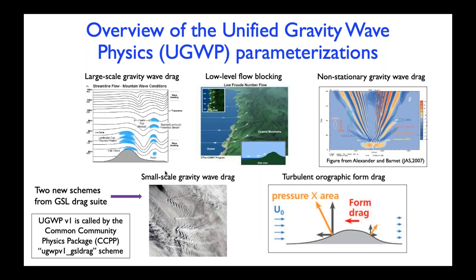As an overview of the unified gravity wave physics suite, there are five physical processes represented. The top three are the more traditional ones: gravity wave drag forced by large horizontal-scale topography, low-level flow blocking, and non-stationary gravity wave drag. These waves are excited by processes such as deep convection and frontal instabilities, with wave sources located around the tropopause, and resulting waves propagate through the stratosphere and above, breaking at very high altitudes. The bottom two processes were recently incorporated in the GSL orographic drag suite — small-scale gravity wave drag and turbulent orographic form drag schemes.